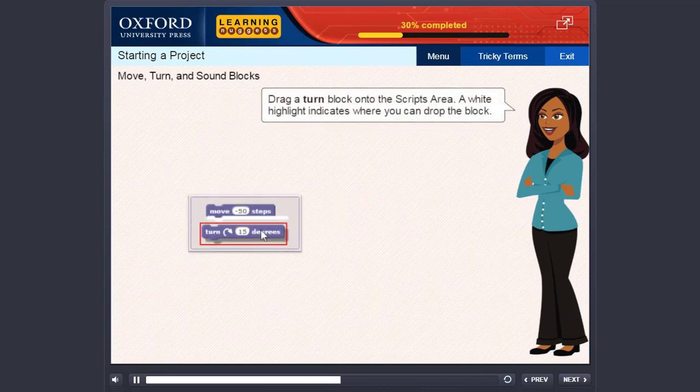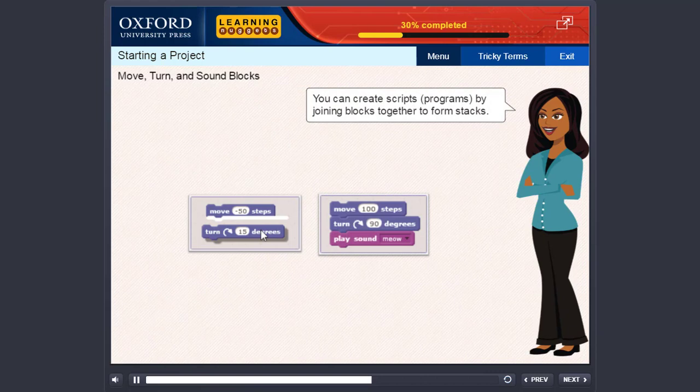Drag a turn block onto the script's area. A white highlight indicates where you can drop the block. You can create scripts, programs, by joining blocks together to form stacks.